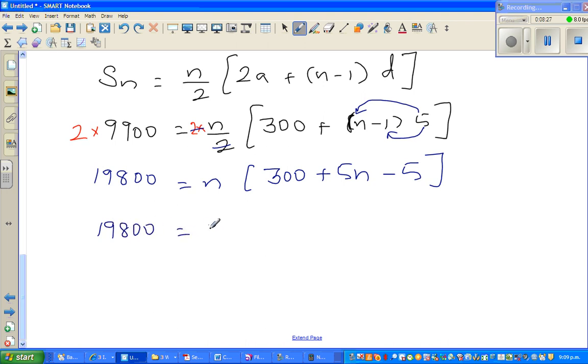This is a pretty lengthy example, but this is an excellence question. So 19800 equals 5n squared plus 295n.